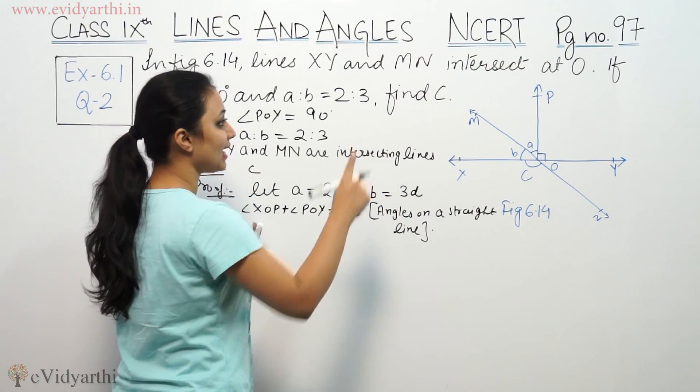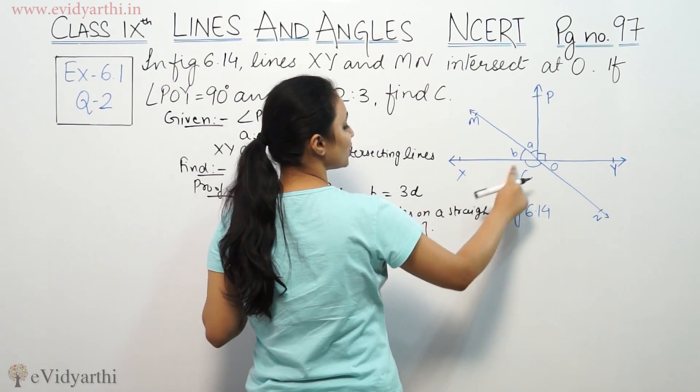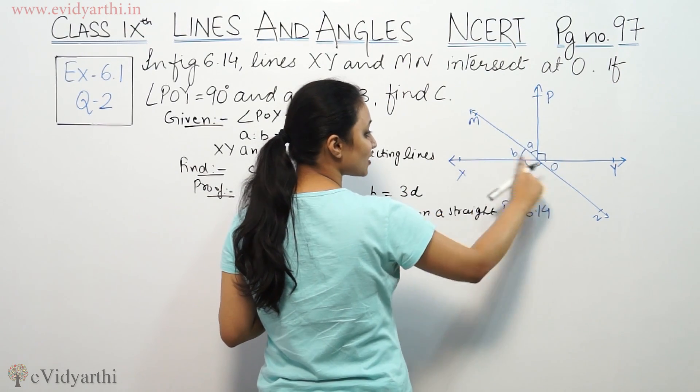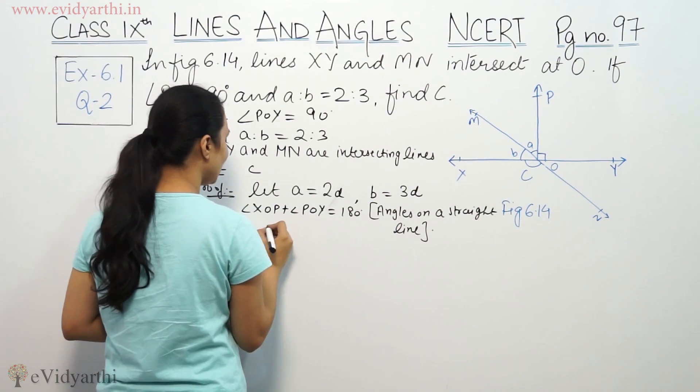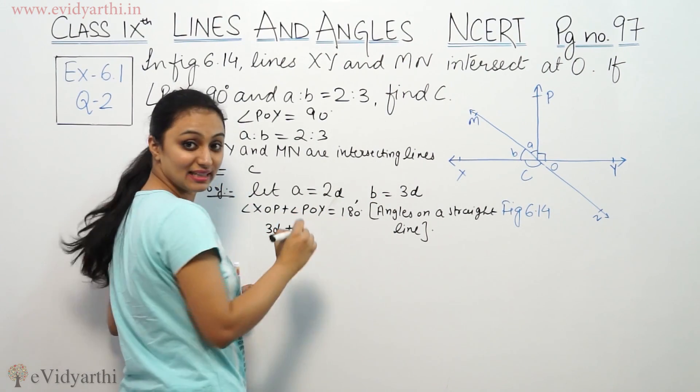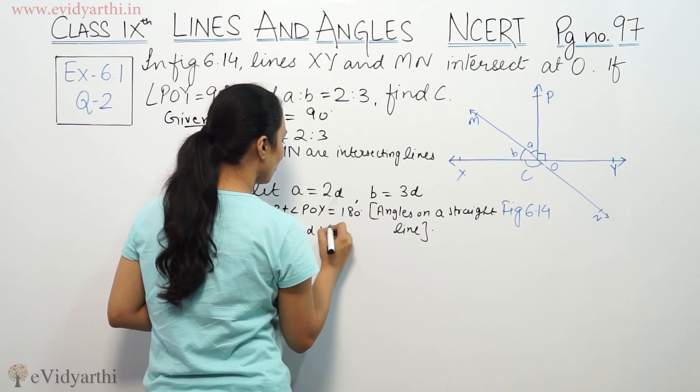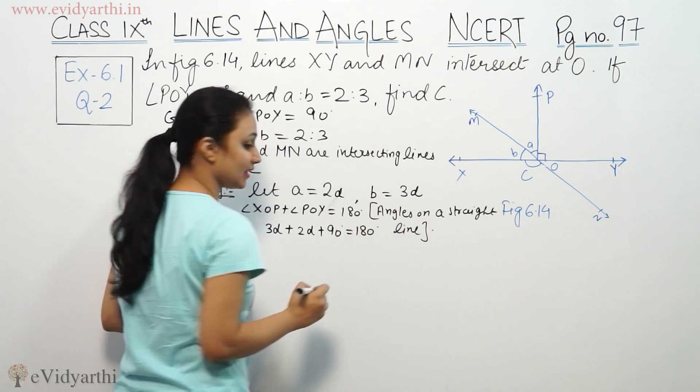So XOP is b, which equals 3d, then a equals 2d. So POY is 90, equals 180 degrees.